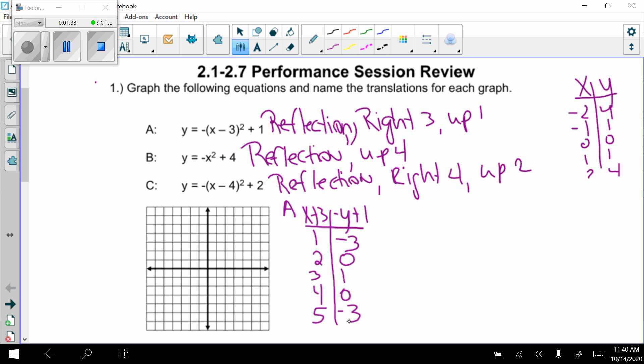All right, so I'm going to plot those first. So my vertex was at 3, 1, 2, 0, 3, sorry, 4, 0, 1, negative 3, 5, negative 3. So then I'm going to go ahead and label this. So this is parabola A.